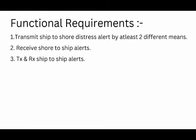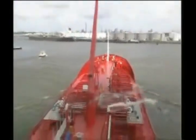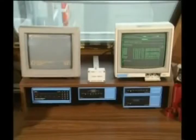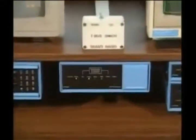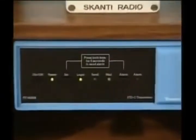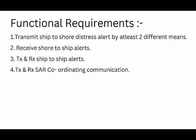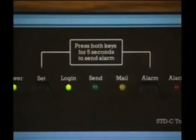Point number three: transmit and receive ship-to-ship distress alerts. On board ships we basically use VHF channel 16 or channel 13 for ship-to-ship distress communication during radio telephony, and we will also send distress alerts by using DSC available in VHF and MF/HF.